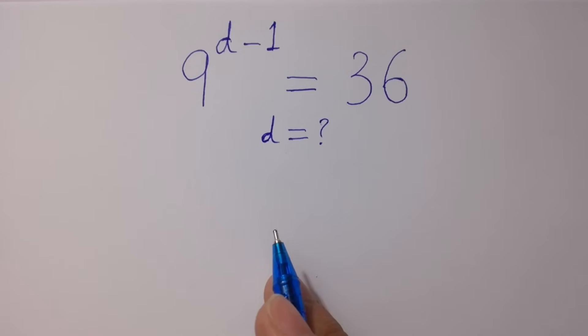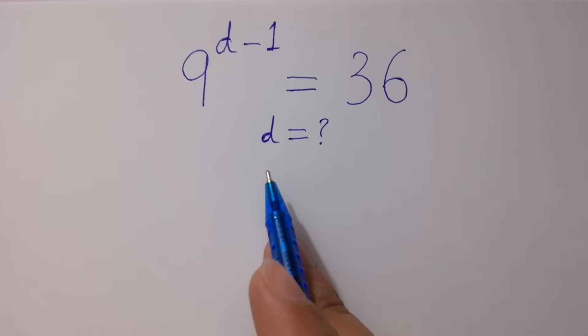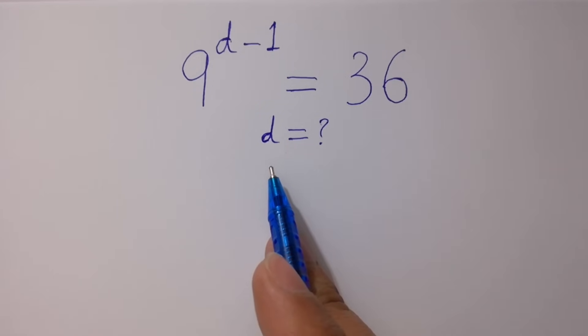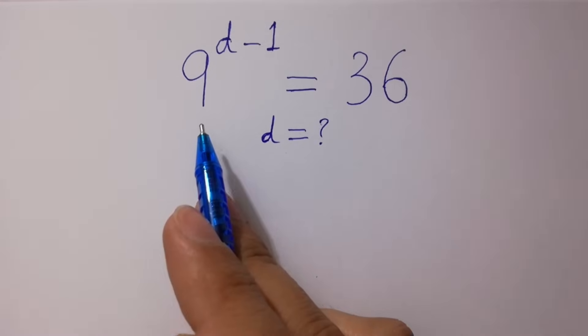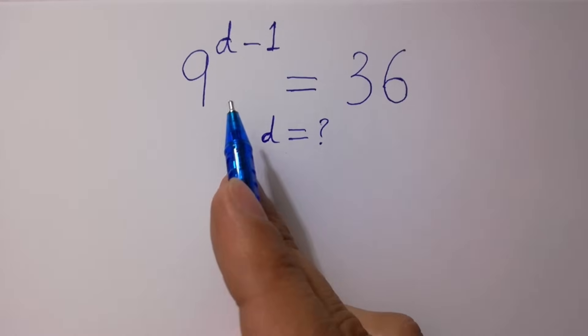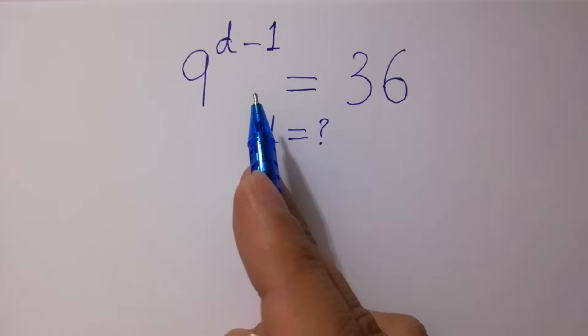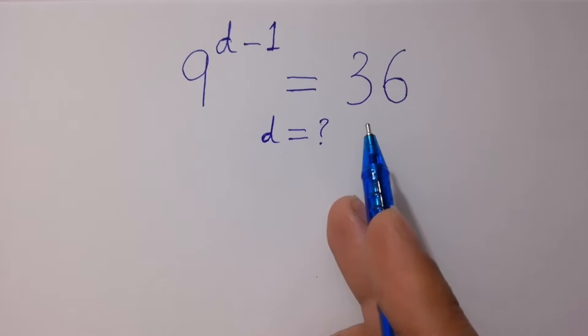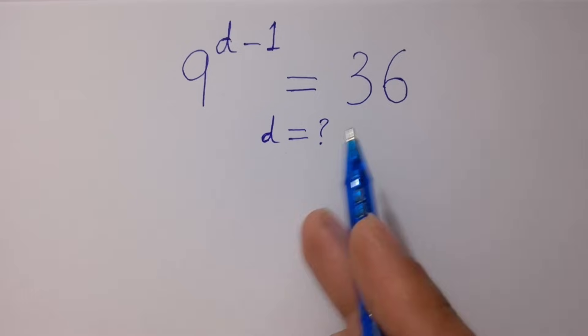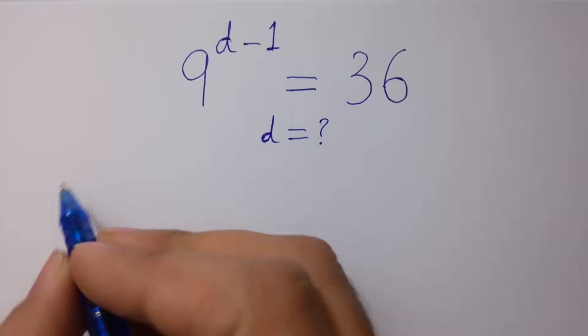Hello friends. Find the value of d if 9 to the power d minus 1 equals 36. Let's have a solution.